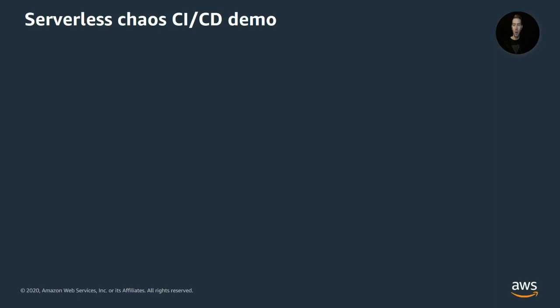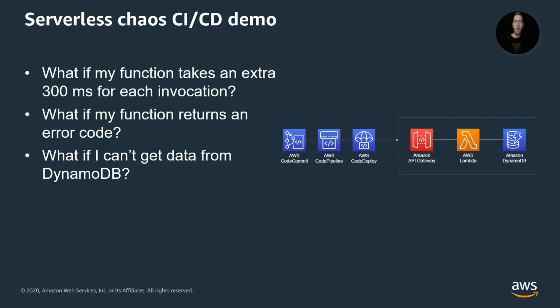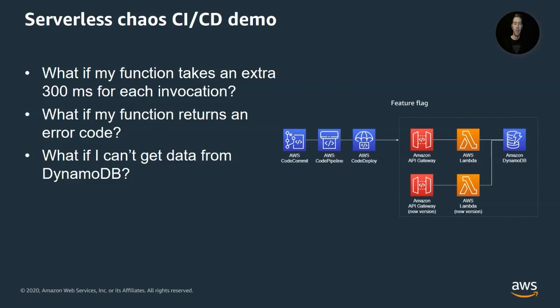A third option is to deploy a new version using feature flags — for instance, using AWS AppConfig — to enable the experiment for certain users, observe and monitor behavior against thresholds, and then if below thresholds, remove the experiment and continue rolling out the new feature to the remaining users. Those are three different ways we can do chaos engineering as part of our deployment pipeline.